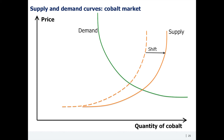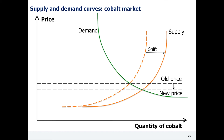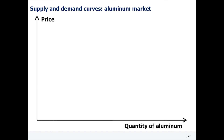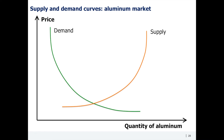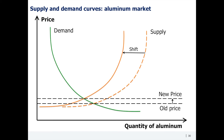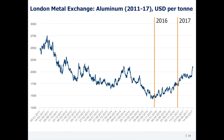Long-term shifts may also be initiated on the supply side. In the aluminum market, China — which produces around half of the world's aluminum — has decided to cut the capacity of its aluminum facilities to combat air pollution. That means less aluminum will be offered at each price point, so the supply curve moves to the left, pushing the equilibrium price up. This is already reflected in the upward price trend in 2016–17.